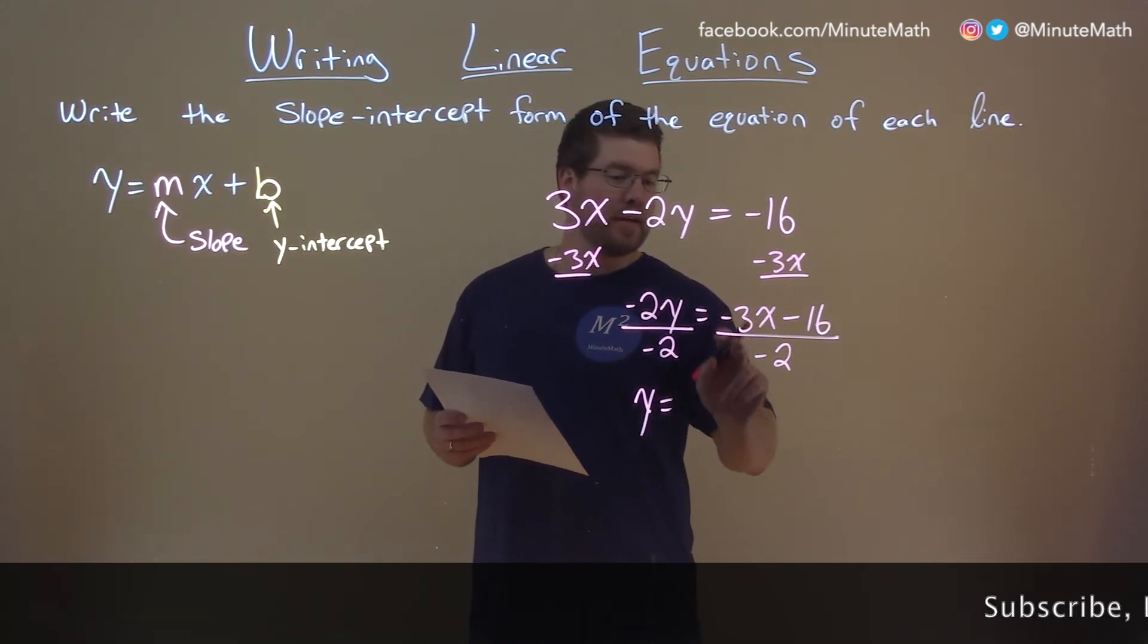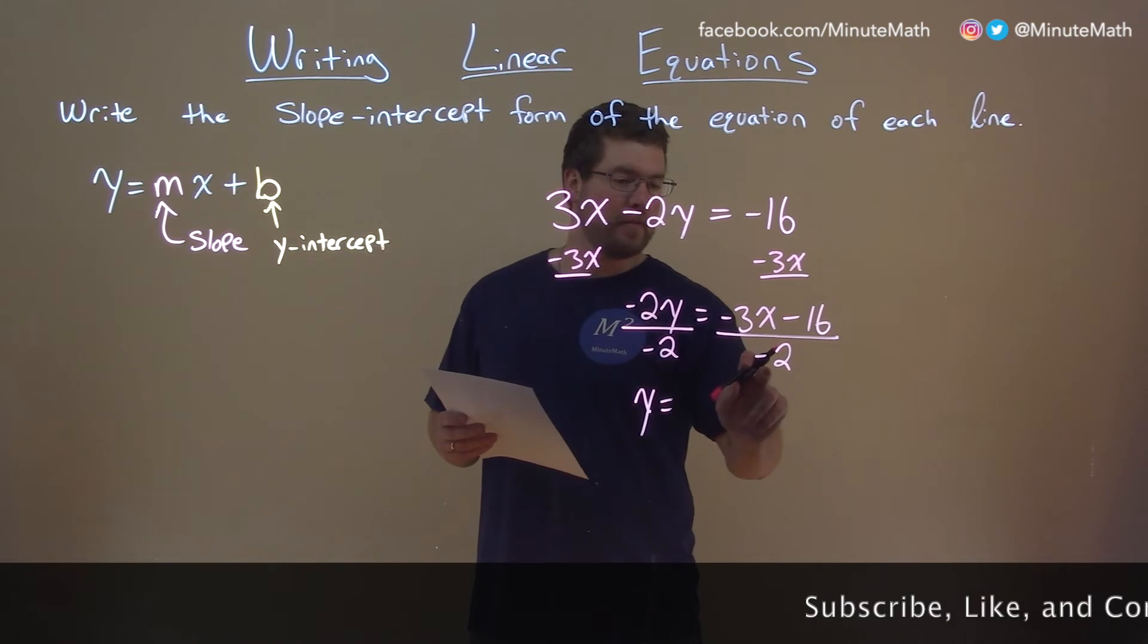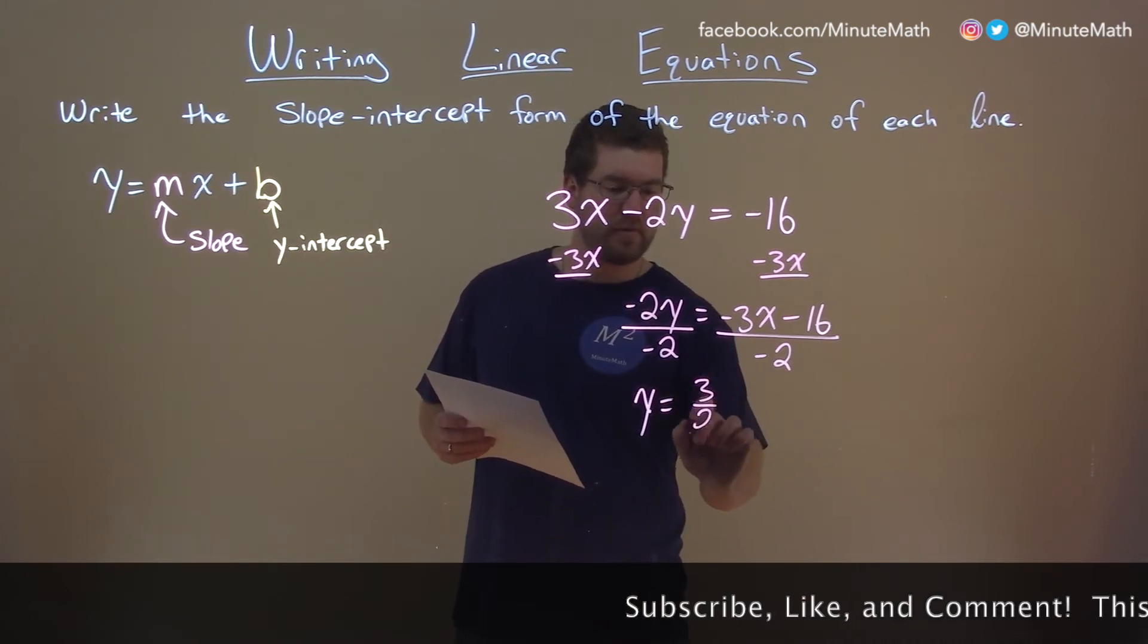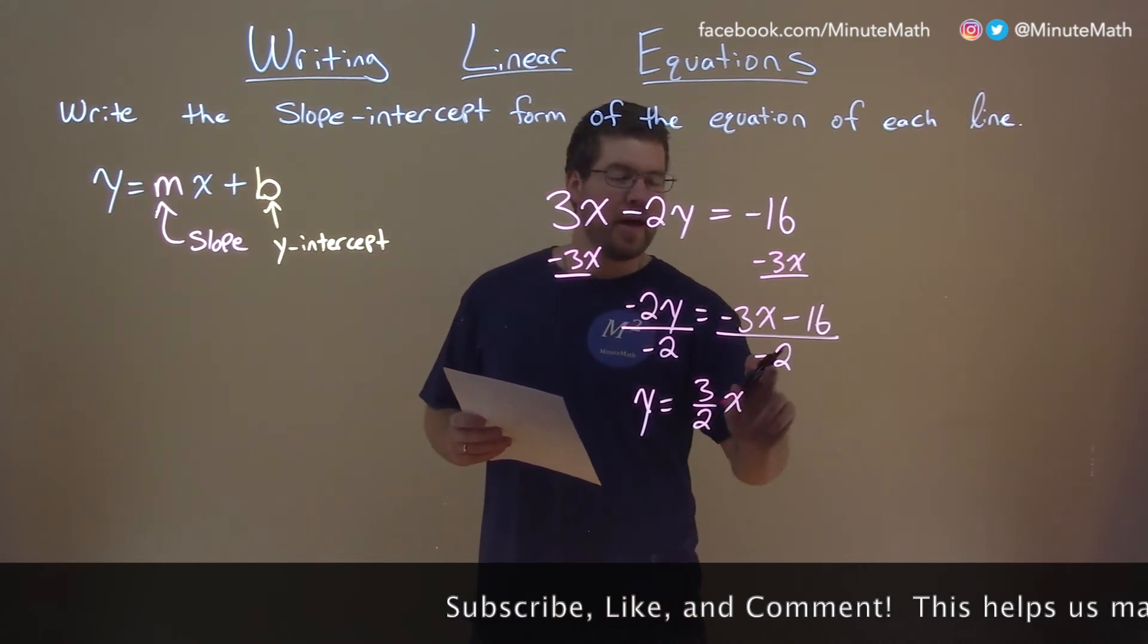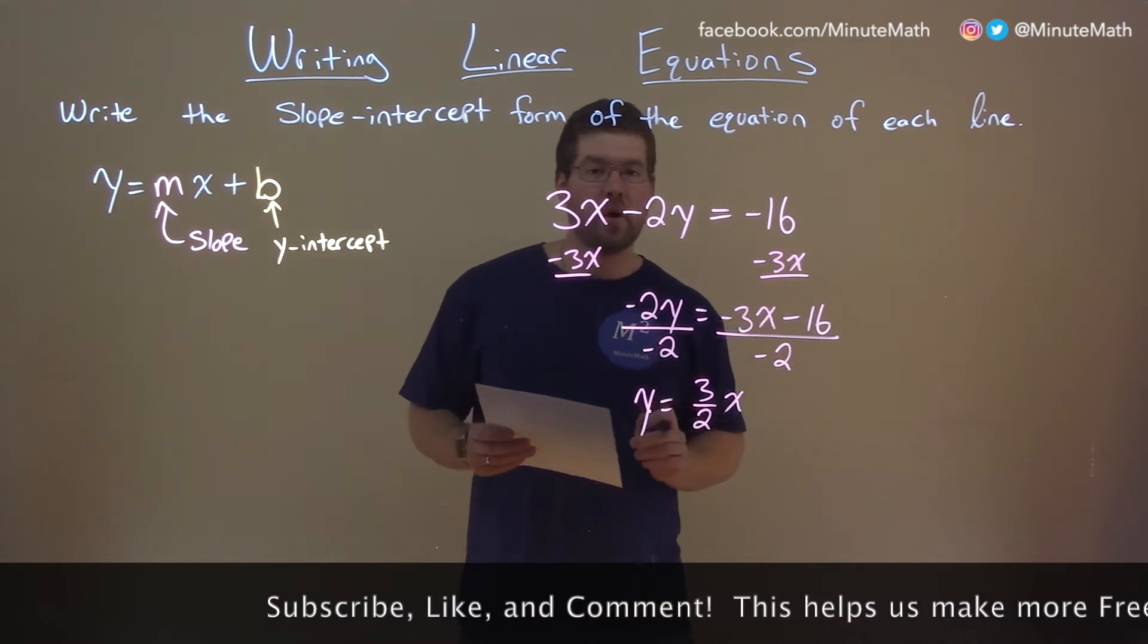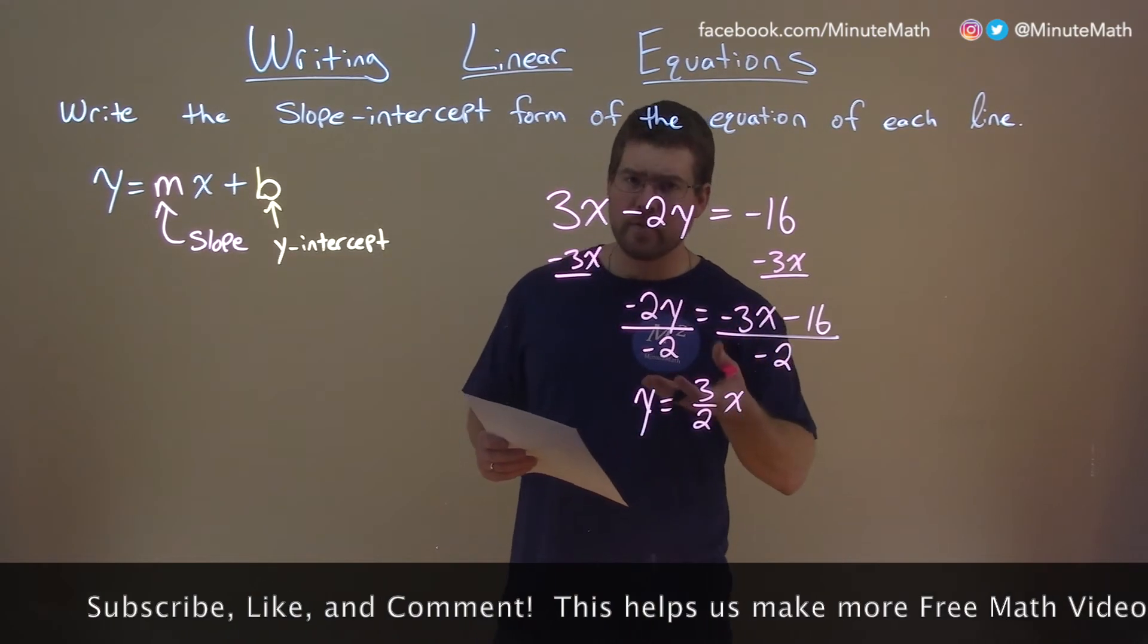Negatives cancel out here for the negative 3 and the negative 2. So we have 3 halves positive x and remember negative 2 needs to go into the negative 16 or minus 16.